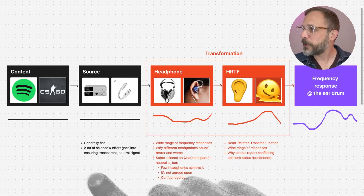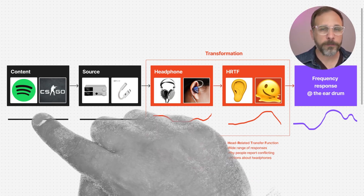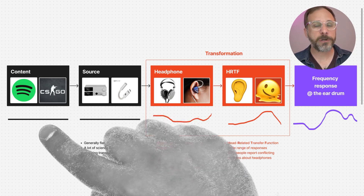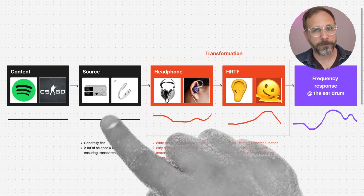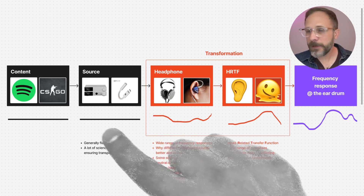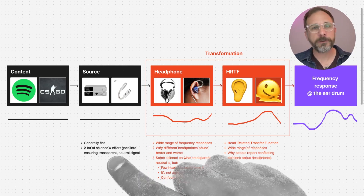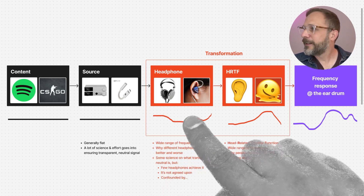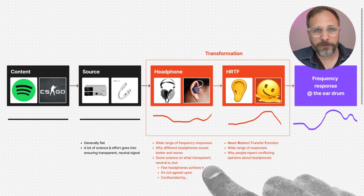Here's a diagram that hopefully helps you understand. Starting over on the left, we've got our content — it could be your music from Spotify, your own music library, a video game, or a movie. This is the original content material that, for illustration purposes, let's describe as a flat frequency response. That content gets passed to your source, your amplifier, your DAC, your cables — and generally the frequency response of that stuff is also flat. There's a lot of science and technology that goes into making sure your sources are passing through a neutral, transparent signal to your headphone. Unfortunately, this is where things get complicated, because headphones and IEMs all have different frequency responses, and this is why different headphones sound different when you put them on your head.